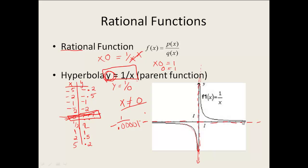So I have another asymptote here, a line that my graph approaches but it's not going to ever touch. On the positive side, as x gets bigger — if I were to take 1 divided by 10,000 — you're going to get a really small number. It's not going to be 0, but it's going to be really close to 0. So this is approaching that line y equals 0, but it doesn't get to touch it. We'll be using asymptotes throughout this entire section when we do graphing.